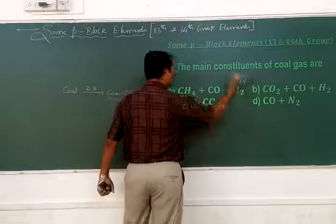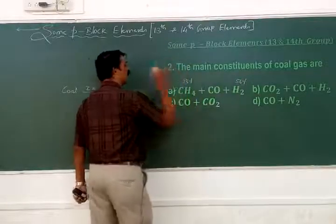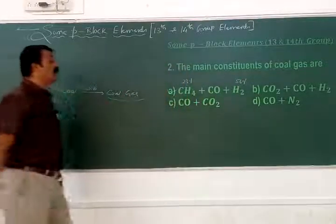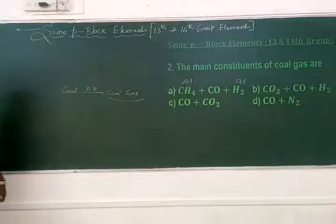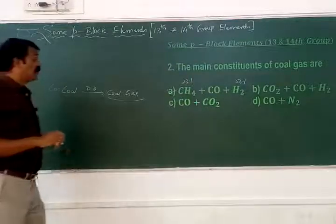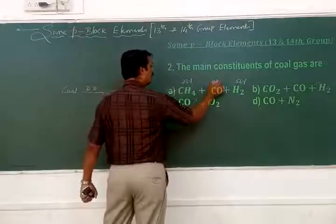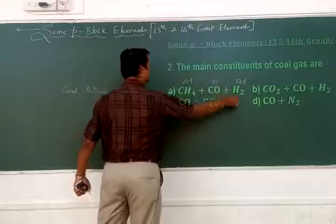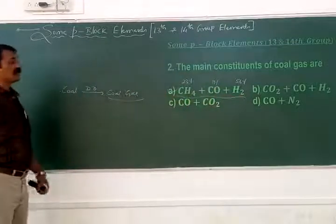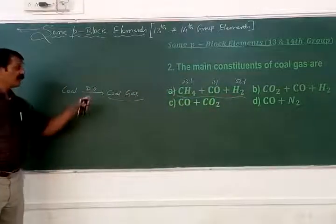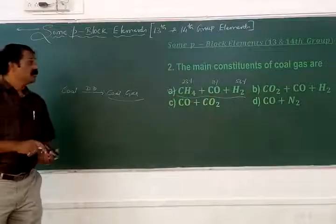In coal gas, methane is found to be around 23%, hydrogen is the highest at 56%, and carbon monoxide is approximately 10–11%. This particular combination is called coal gas.